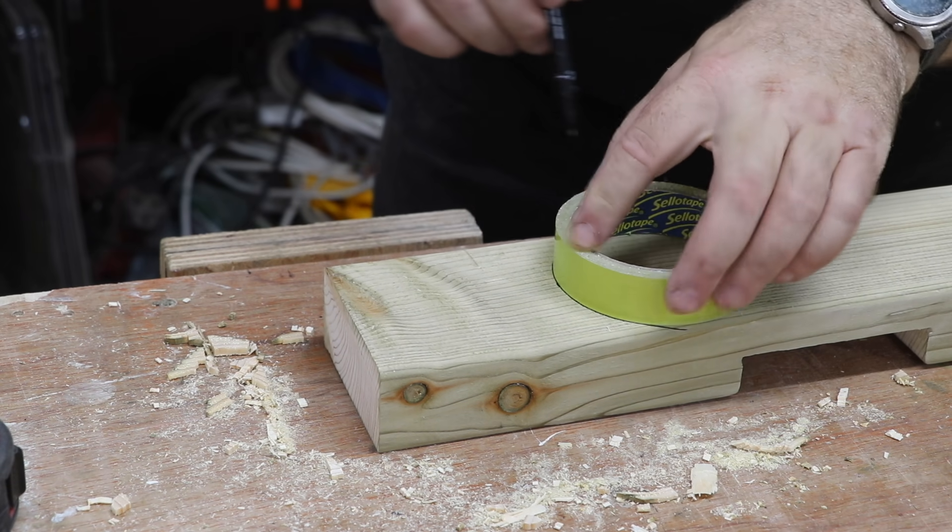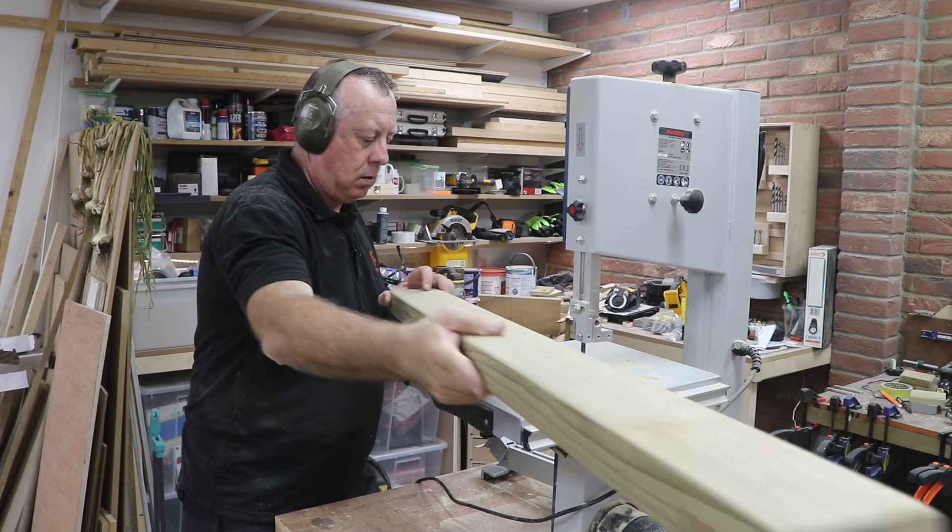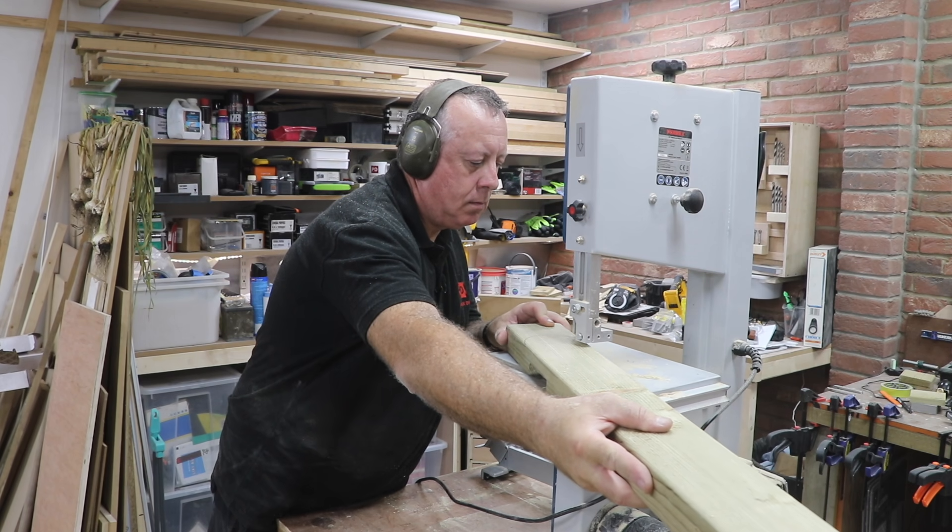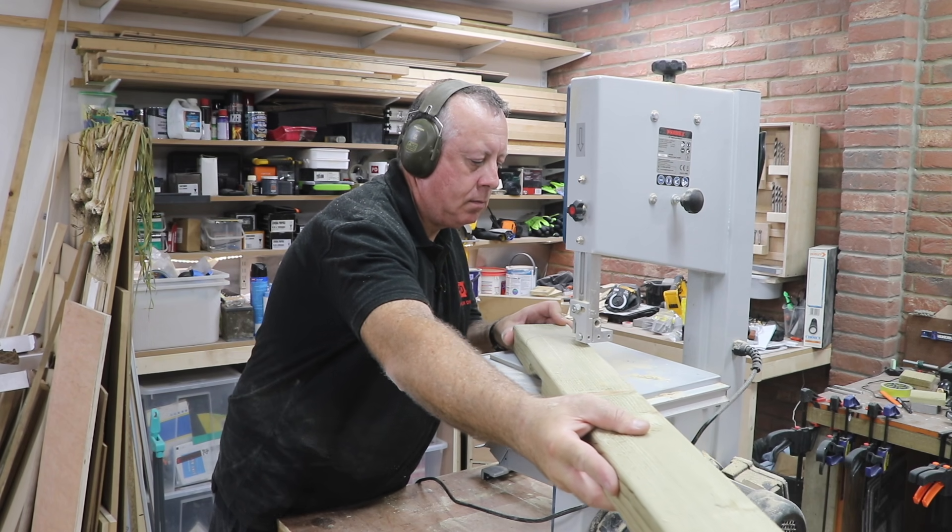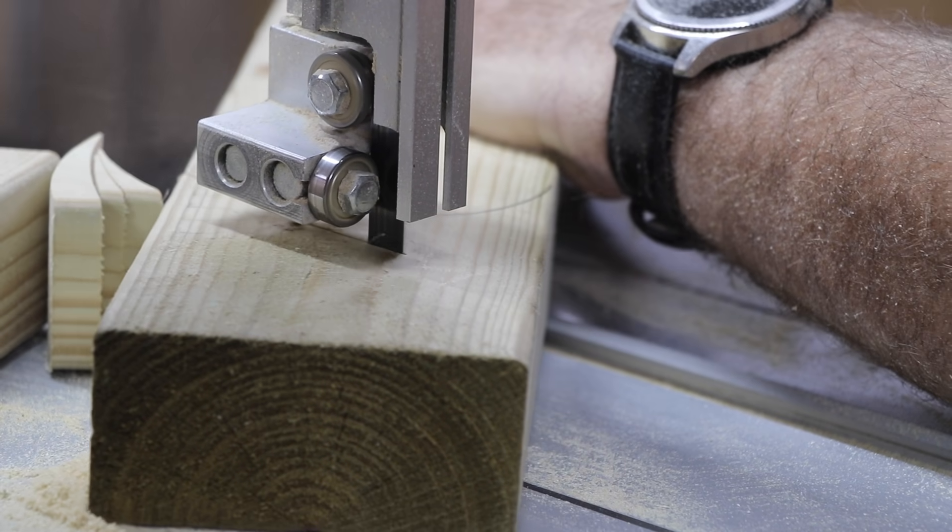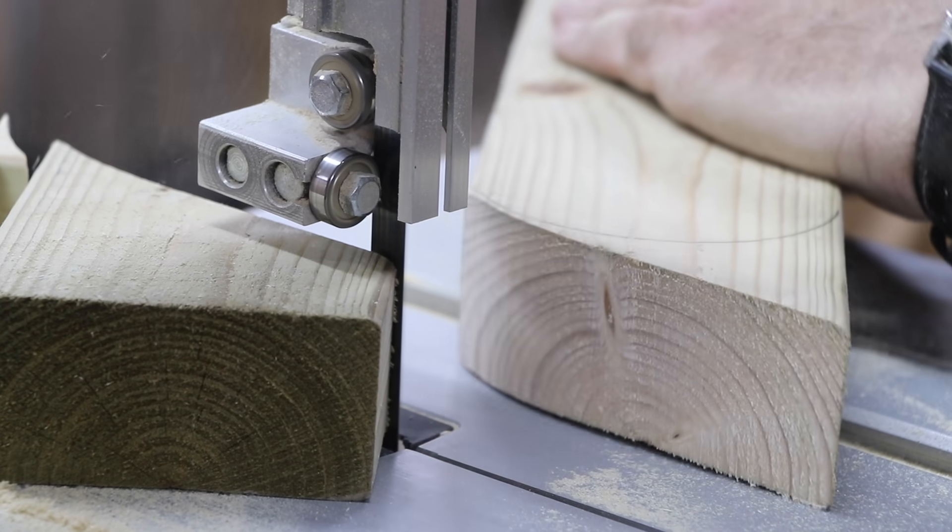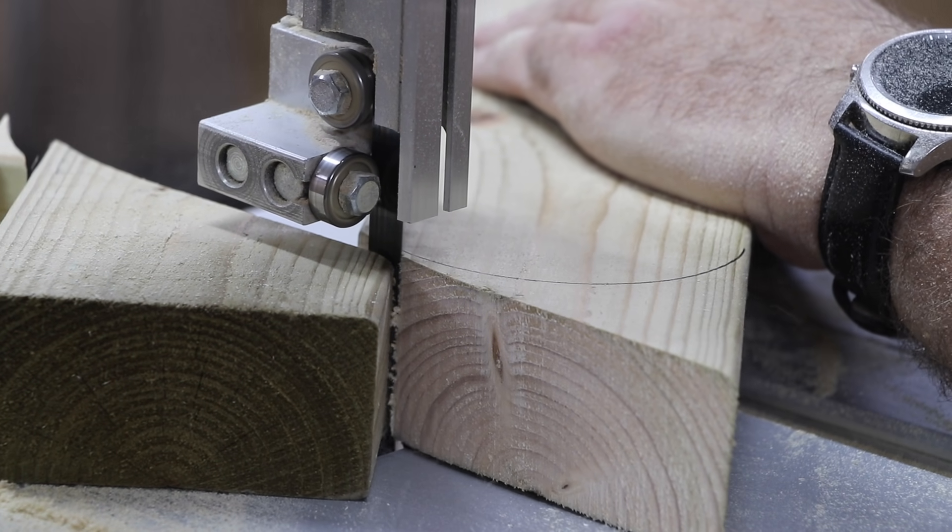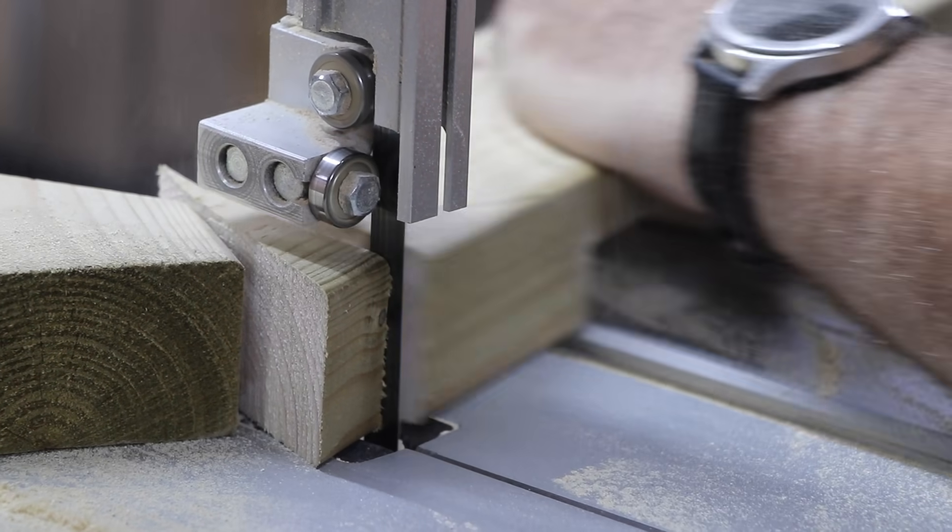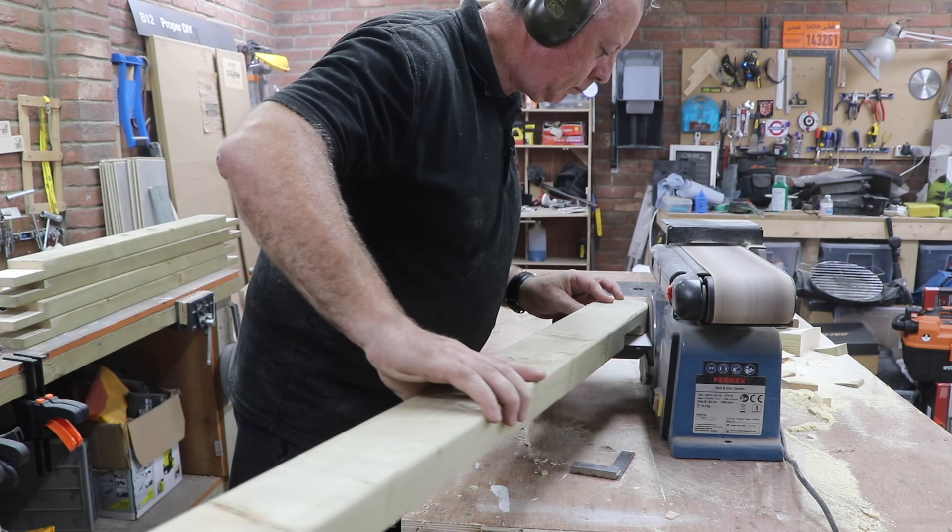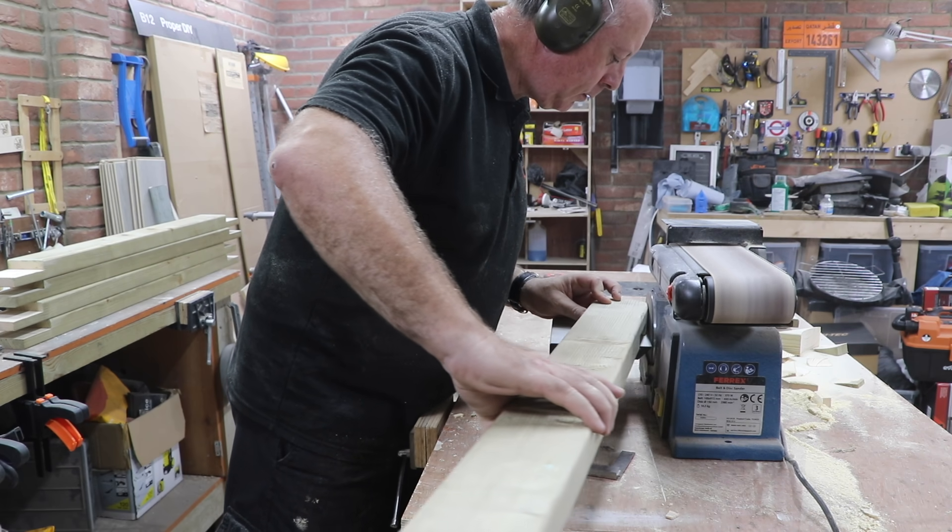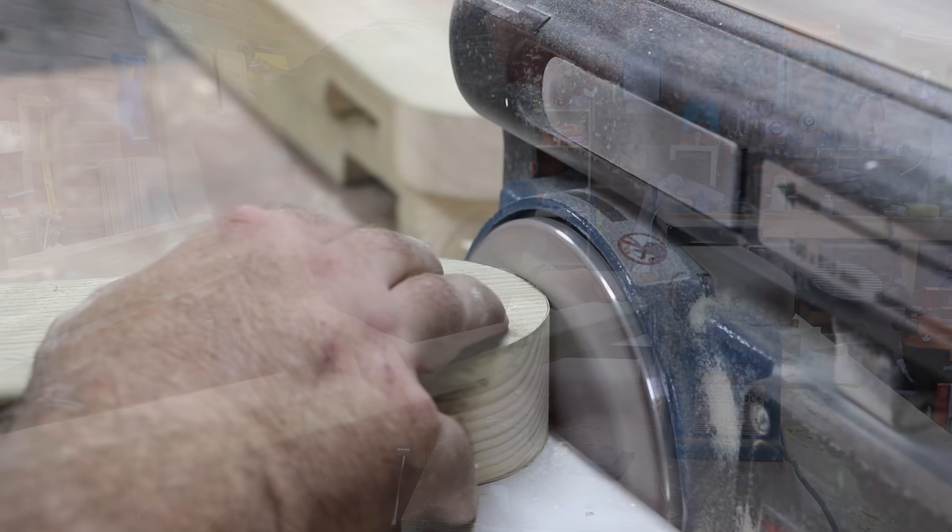I then take off the majority of the waste material with the bandsaw, which doesn't quite make it around the small radius curve with the blade that I've got. So I just take off as much as I can in almost straight lines. I can then use my sander to sneak up on the line, which gives quite a nice finish, albeit with a very square edge.